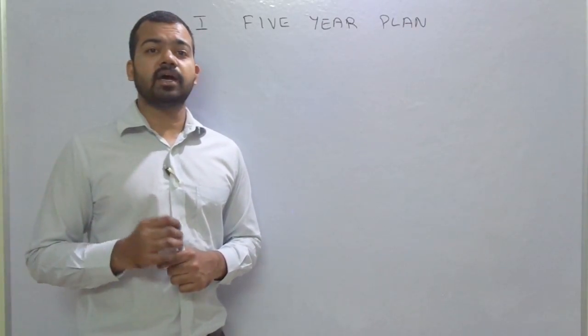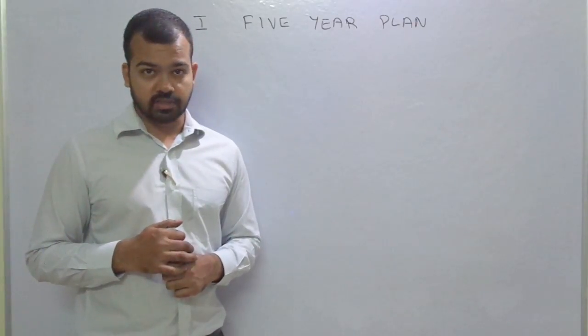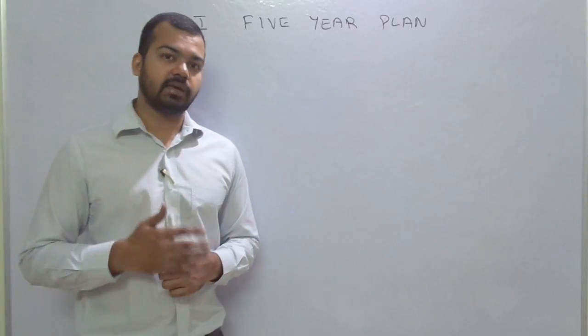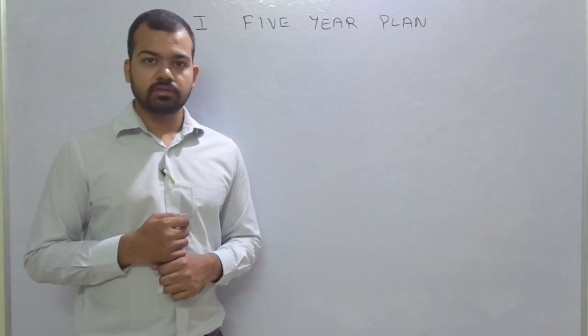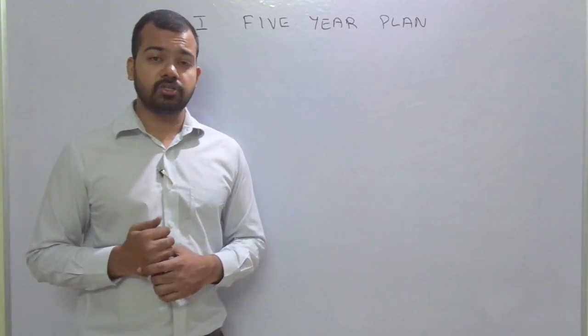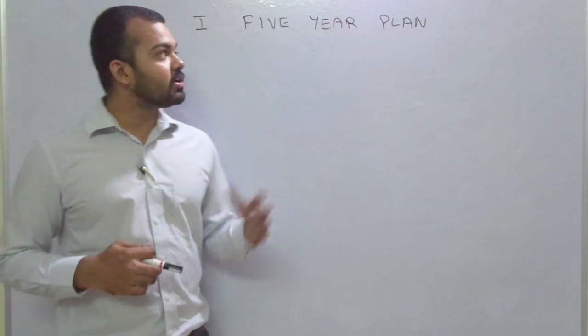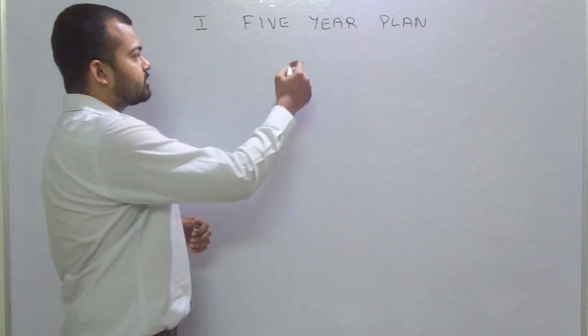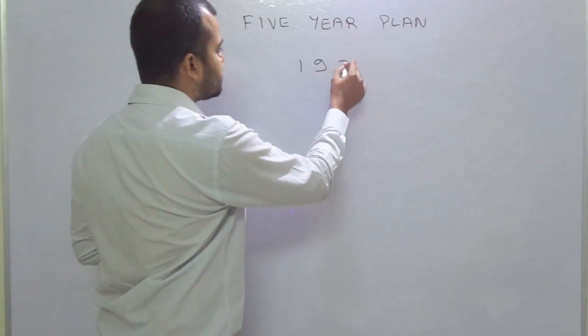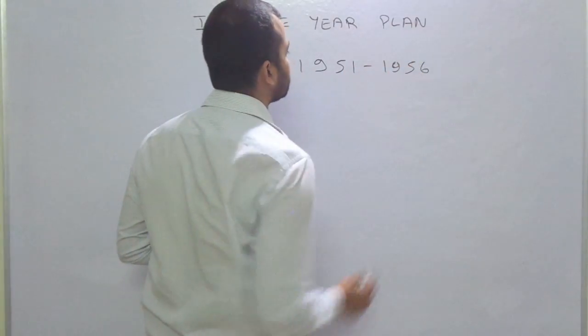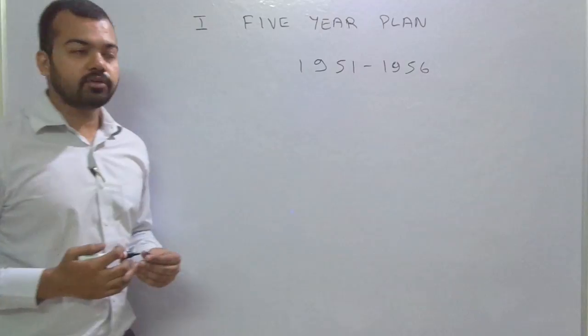The planning commission was set up by an executive resolution. The chairman of planning commission was the prime minister, same with Niti Ayog also, the chairman is also prime minister. The main work is allotted to deputy chairman. So in the planning commission, we start with the first 5-year plan. The period was 1951 to 1956.